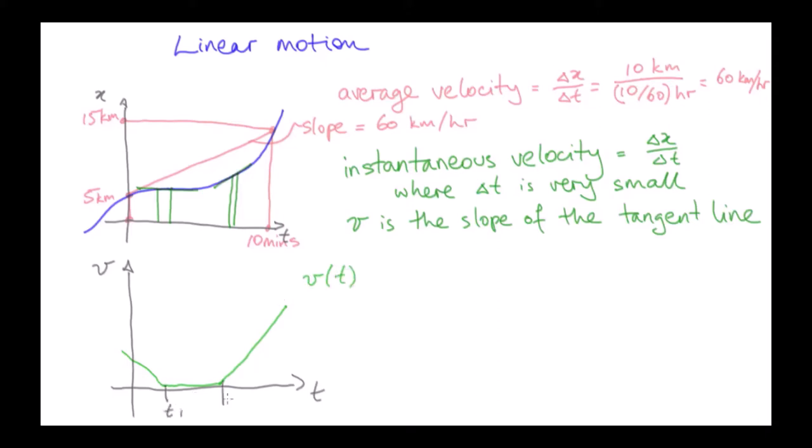The velocity curve is drawn in green and just as slopes on the displacement graph gave us velocity, slopes on the velocity graph give us acceleration.